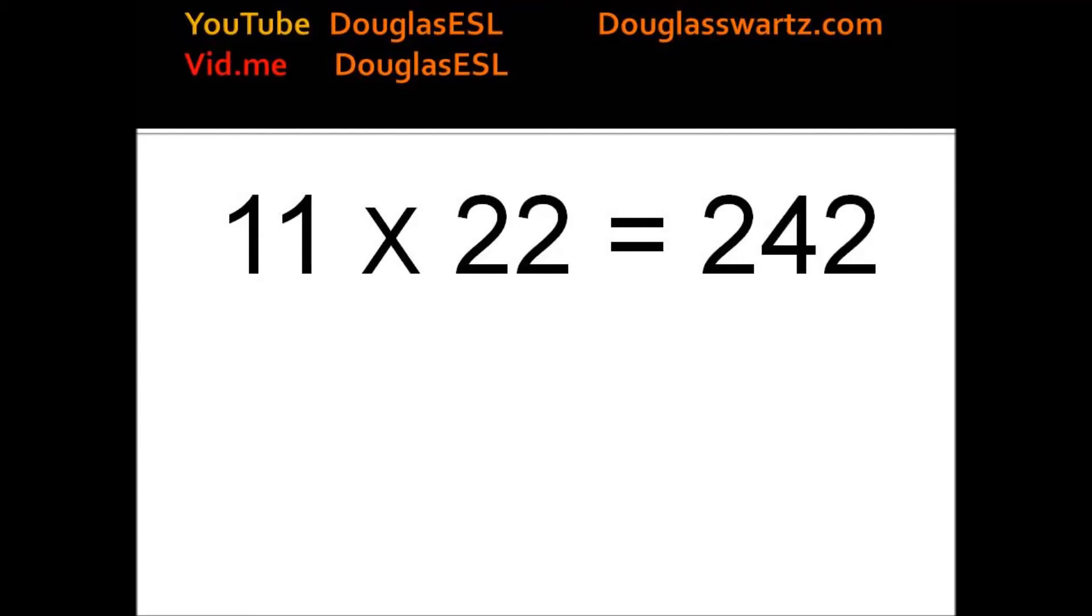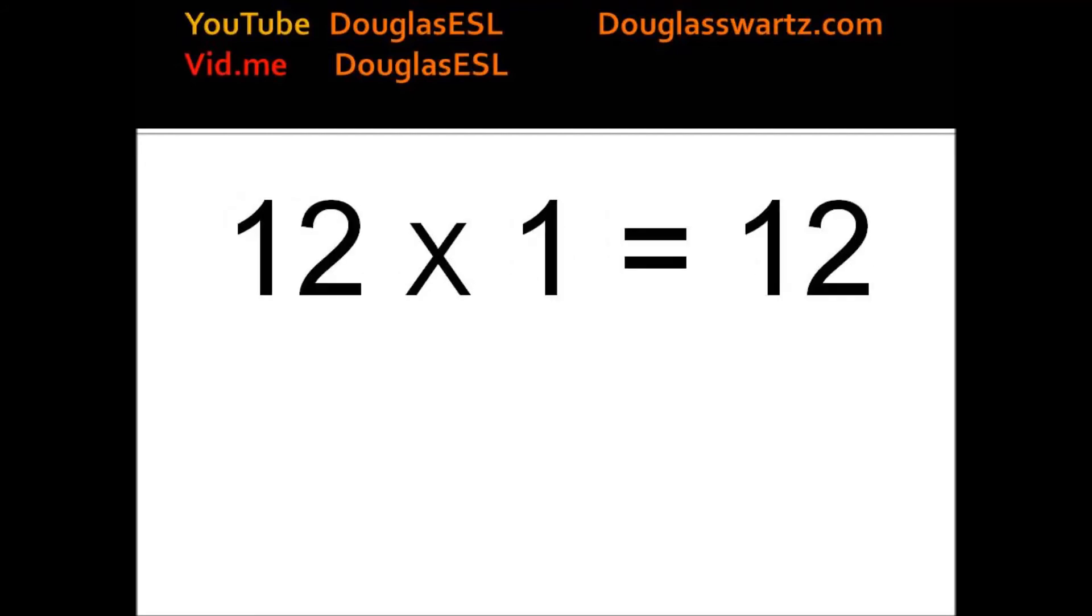11 times 22 equals 242. 11 times 23 equals 253. 11 times 24 equals 264. 11 times 25 equals 275.